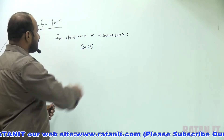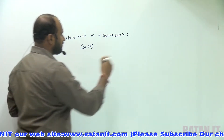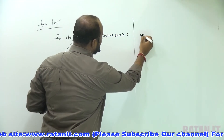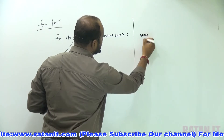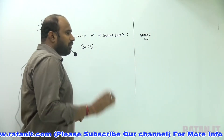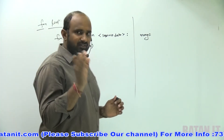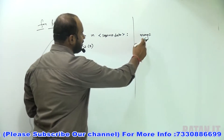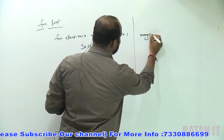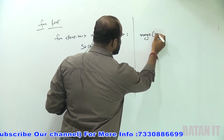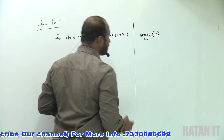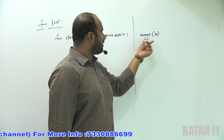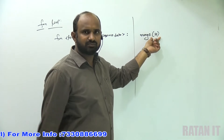To understand the for loop, first of all we must know the range function. In Python we have the range function. If I want to print data in some specific range, I can go for the range keyword. Range of 10 — by default it prints data from 0 to 10.